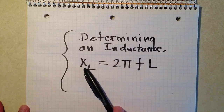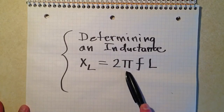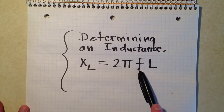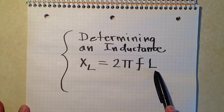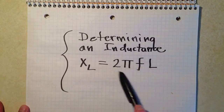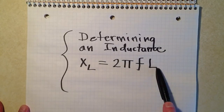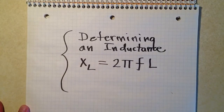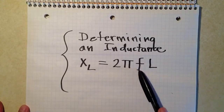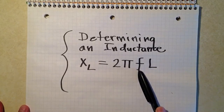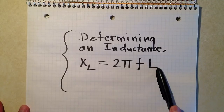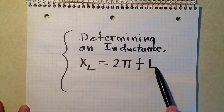Here once again is the formula for inductive reactance in terms of frequency and inductance. If you know the frequency in hertz and the inductance in henrys, then you multiply by 2π — that's roughly 6.28 — times the frequency in hertz times the inductance in henrys, and that will give you the inductive reactance in ohms. This formula also works if you use megahertz for frequency and microhenrys for inductance.